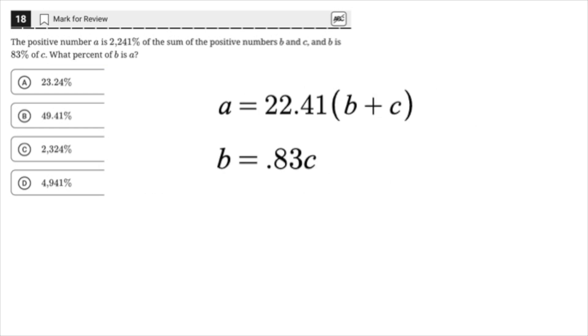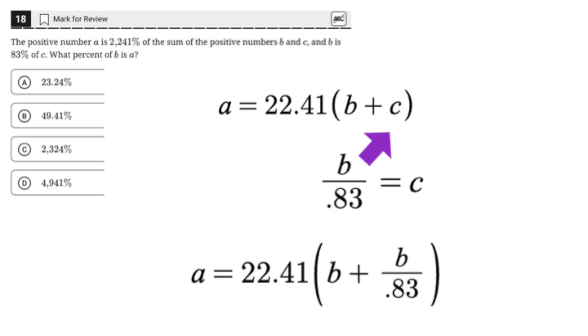Now express C in terms of B in order to eliminate C. Divide by 0.83 on each side, C is B divided by 0.83. Now we can replace C with our expression in terms of B. This gives us A equals 22.41 times open parenthesis B plus B divided by 0.83, close parenthesis.